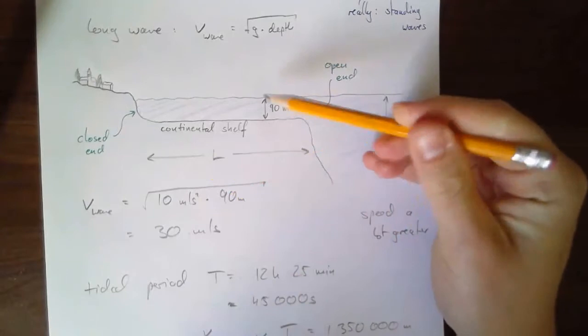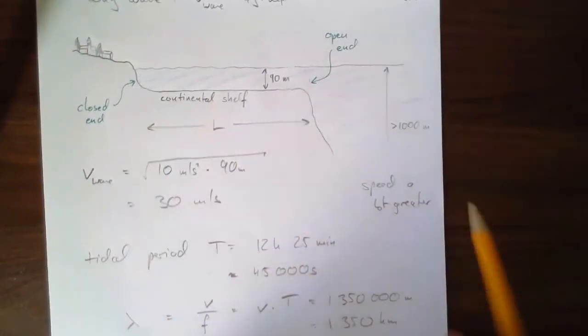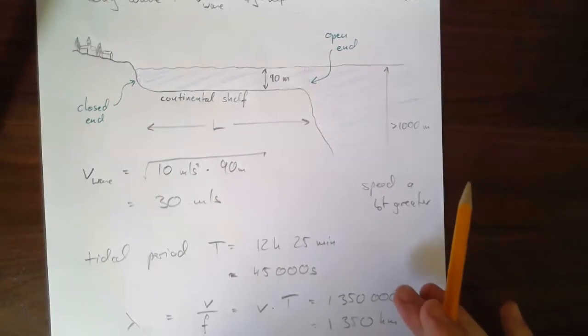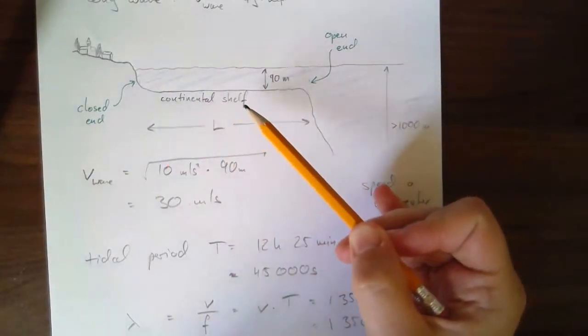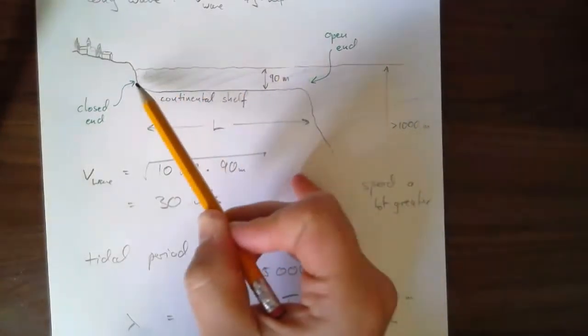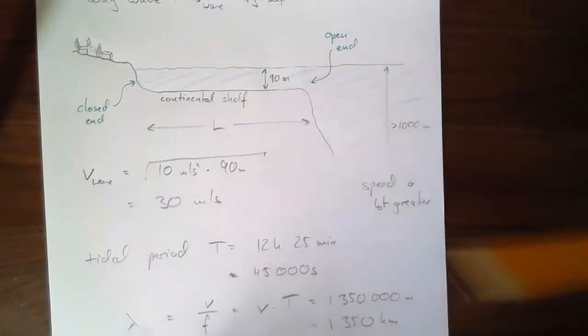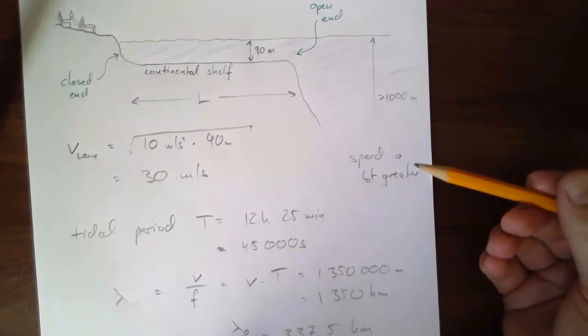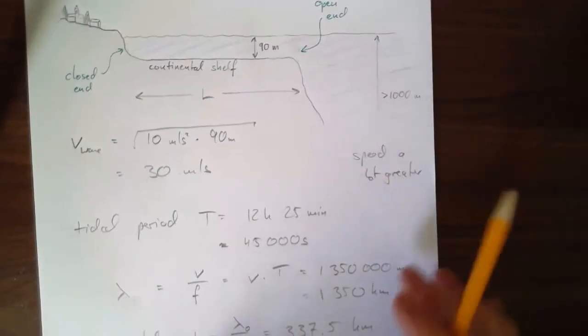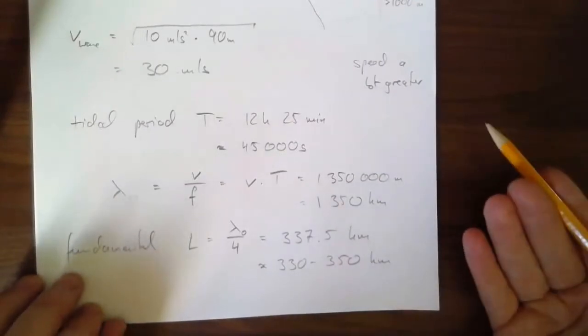Now, of course, some shelves might be a bit too deep compared to their length. Some of them might be too shallow compared to the length for standing waves. So the conditions have to be just right. But if they're right, you get standing waves for the tide. The incoming tides get reflected in such a way that it builds up with the existing tide. And then you're going to get bigger tides.